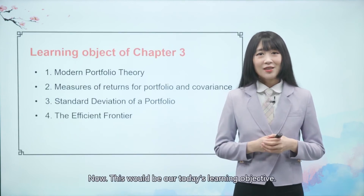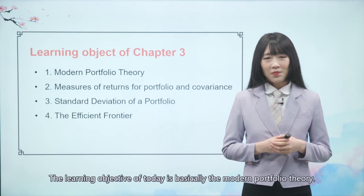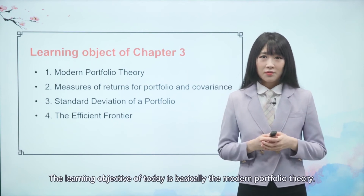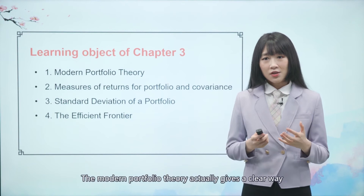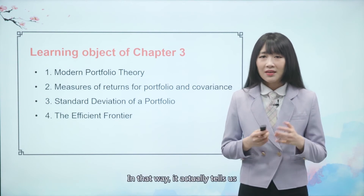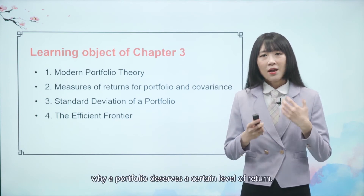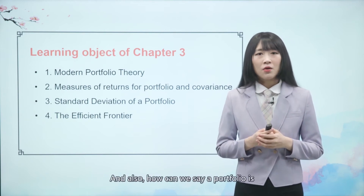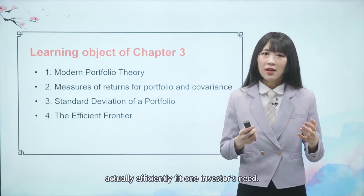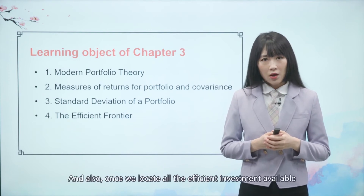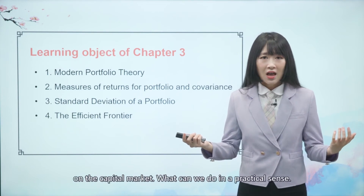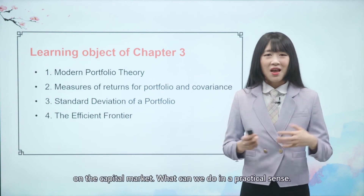This would be our today's learning objective. The learning objective of today is basically the Modern Portfolio Theory. It actually gives a clear way to quantify a portfolio's risk and return. It tells us why a portfolio deserves a certain level of return, how we can say a portfolio is efficiently fit for what investors need, and what we can do practically once we locate all the efficient investments available on the capital market.